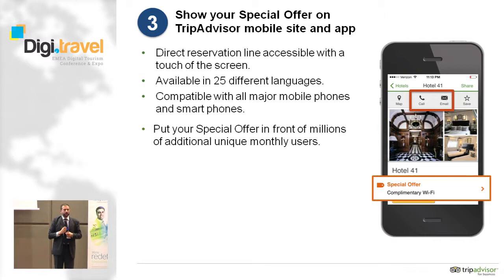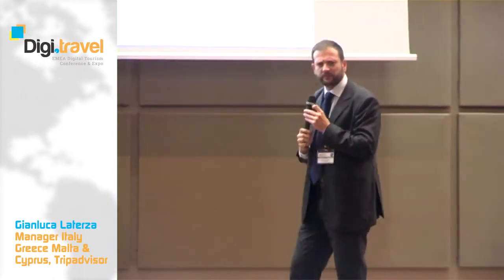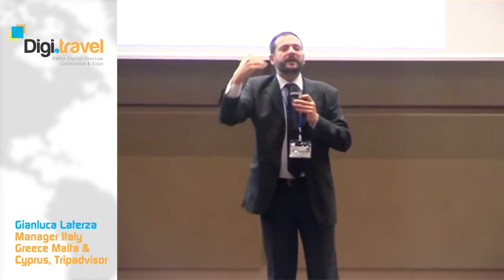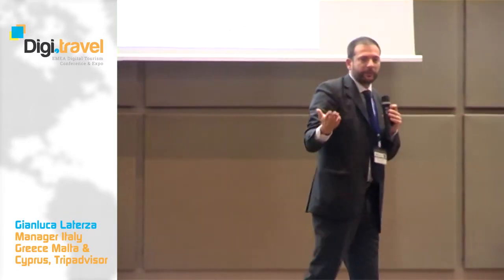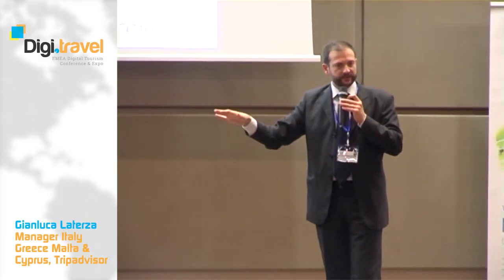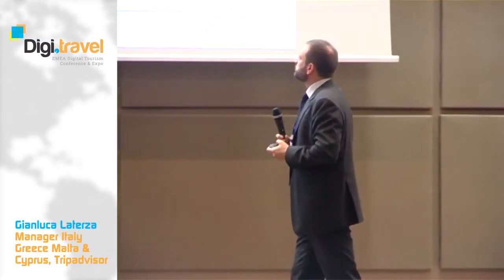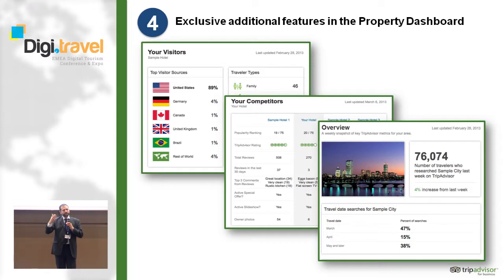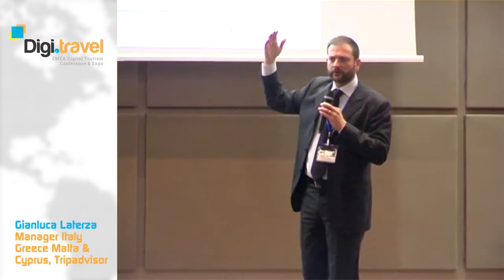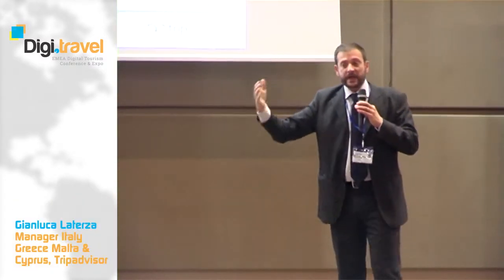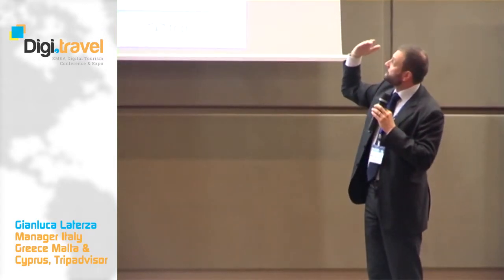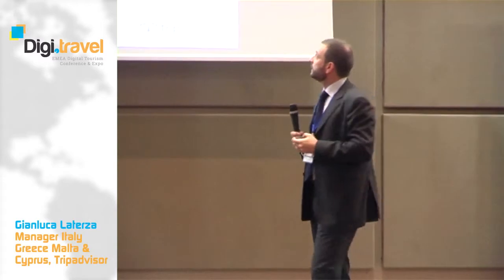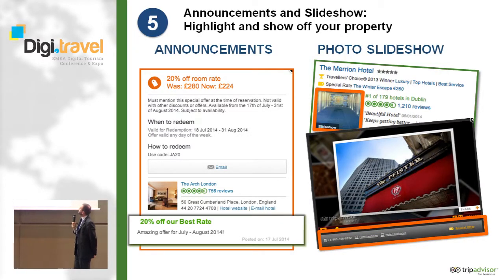Everything is available on mobile as well. Until around September or October, mobile was an upgrade you had to pay extra for. Now it is no longer an upgrade — it is included in the standard business listing. Business listing also includes a lot of data in the property dashboard, covering data about your competitors, your property, and your visitors.